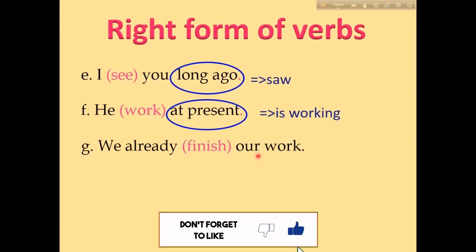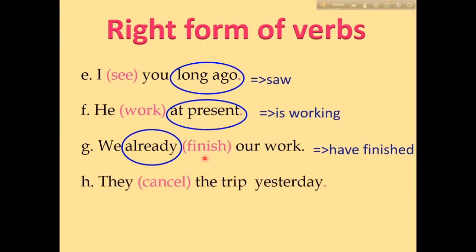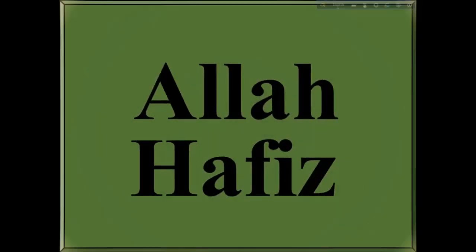Number G: 'We already finished our work.' This term is used in present perfect tense. Have/has plus verb 3 is used in present perfect tense. 'Finish' is the verb here, so the correct form is 'have finished.' Number H: 'They cancel the trip yesterday.' 'Yesterday' is used in past indefinite tense, and the past form of the verb is used. 'Cancel' is the verb here, so the correct form is 'cancelled.' This is the present form and this is the past form. I think now it is clear to you.